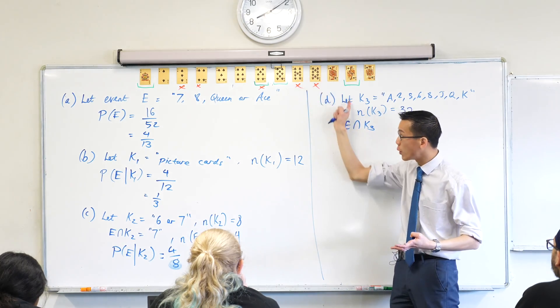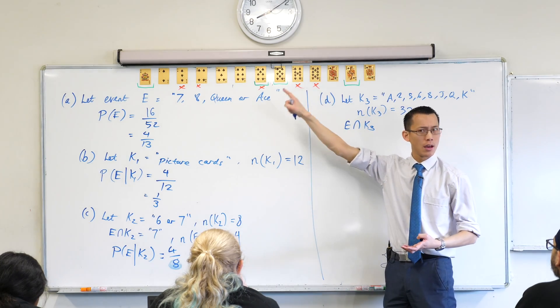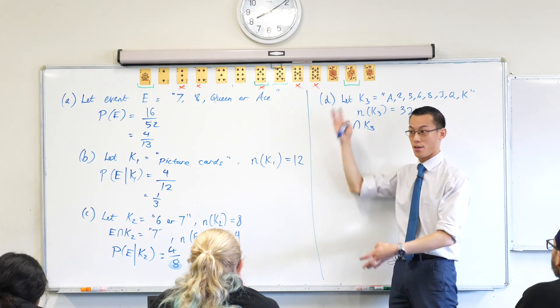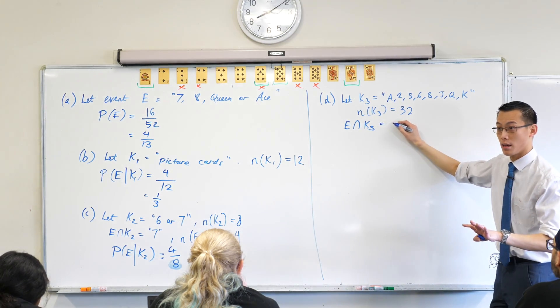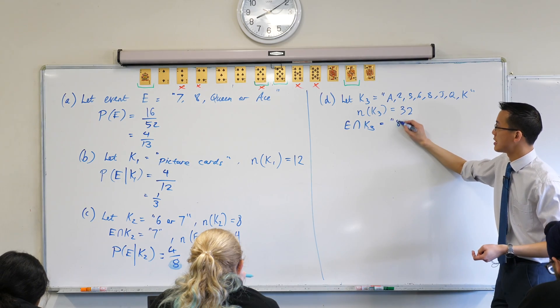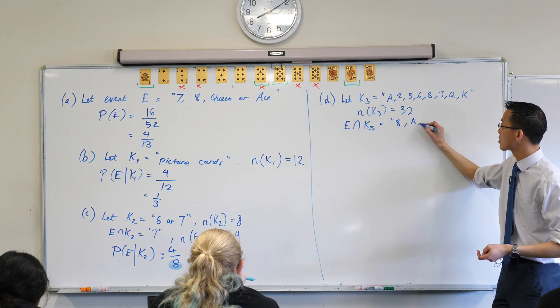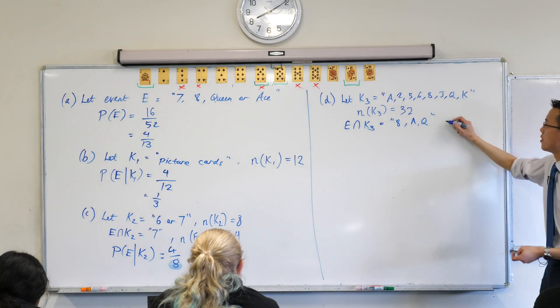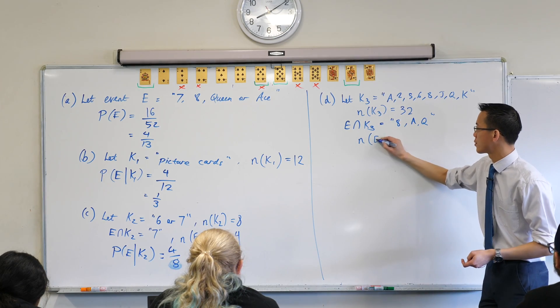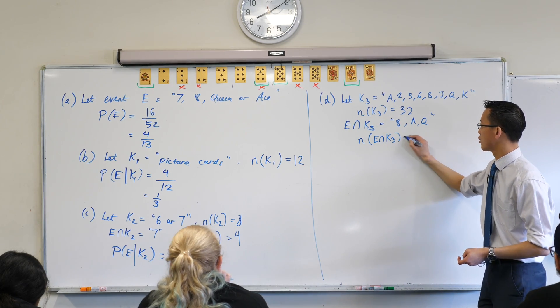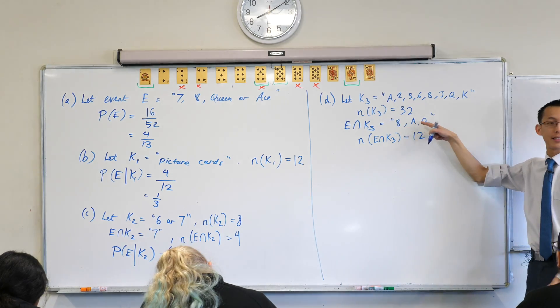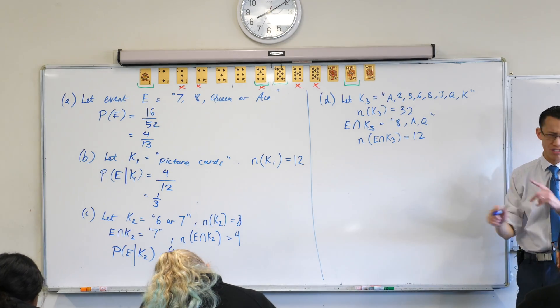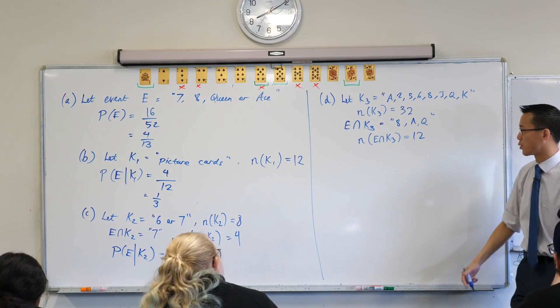Eight, queen, ace. There's three of those, and how many of each of those do I have? Four. So I think this should be 12. Now I'm just going to write that first. It's the eight, the ace, and the queen. And so the number of those, like you just told me, should be 12. There's how many eights and aces and queens are there in a deck? There should be 12, right? Assuming you've got a good deck.